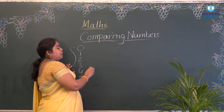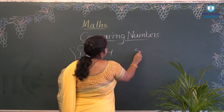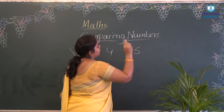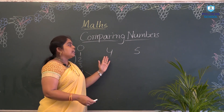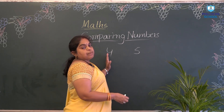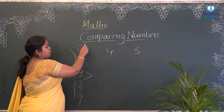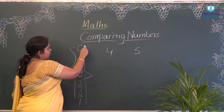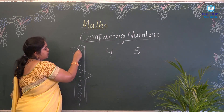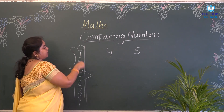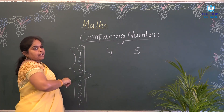We will take 2 numbers — 4 and 5. How can you say which is big and which is small? If you see the order, we have 0, 1, 2, 3, 4 — it is going from small to big.